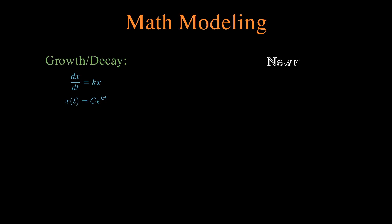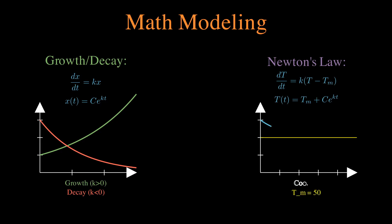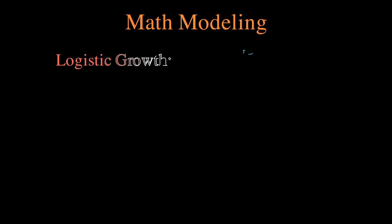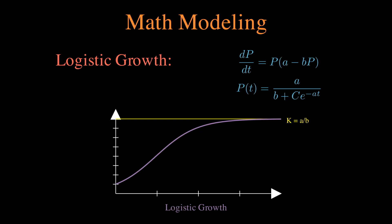The reason differential equations are so popular is because you can say something like the change of a population is directly proportional to the population itself, and you get an explicit solution that looks like a population growing or decaying. Newton's law of cooling says the temperature of an object changes proportional to the difference between the object's temperature and the surrounding temperature. Another popular equation is logistic growth, where the change in population depends on the population and how close it is to the carrying capacity, producing a graph with a limit on how high the population can go.